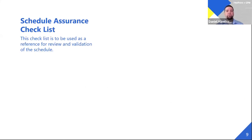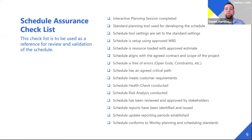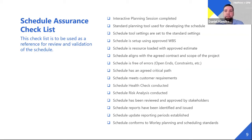Jumping into schedule assurance — this checklist is to be used as a reference document for validation of the schedule. The checklist represents the many steps a planner must take to ensure a schedule is developed correctly. We use this checklist to ensure we go through the correct process of developing the schedule, conduct review cycles, and add assisting documents such as a schedule basis. The first step in this checklist is to complete an interactive planning session. If this is not completed, the planner cannot proceed to the next step, and it is signed off by a project management representative.